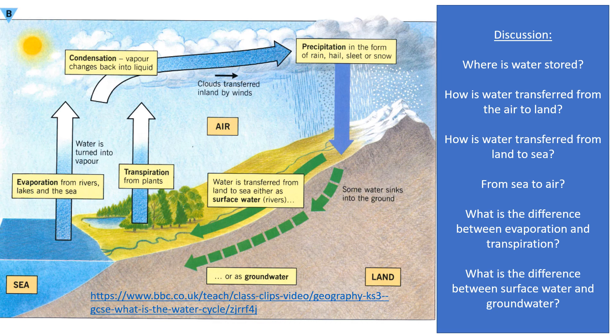Next question: what is the difference between evaporation and transpiration? Both involve liquid water turning into water vapor. However, evaporation is from a river, a lake, or the sea. Whereas transpiration is essentially evaporation but from plants, vegetation, and trees.